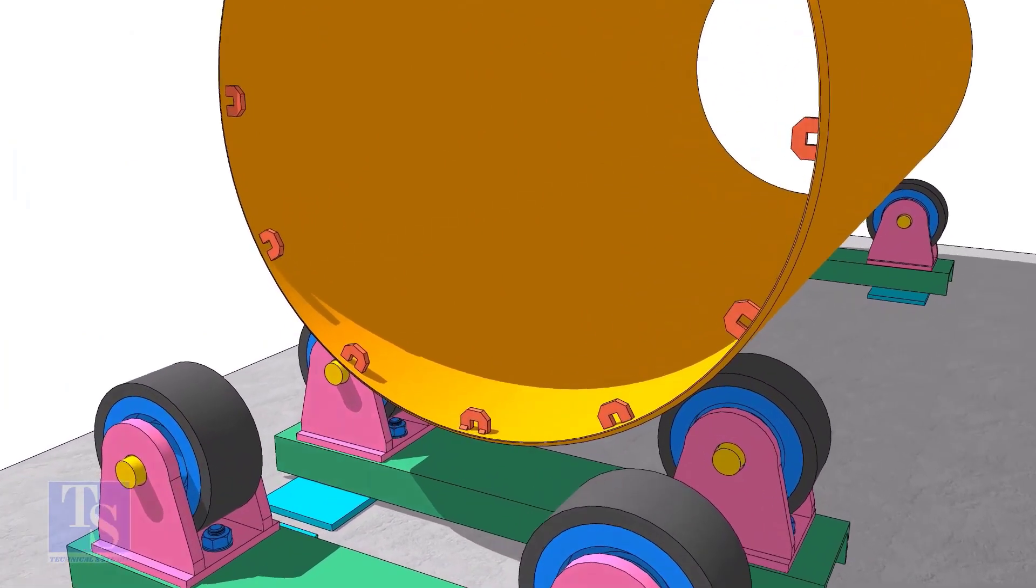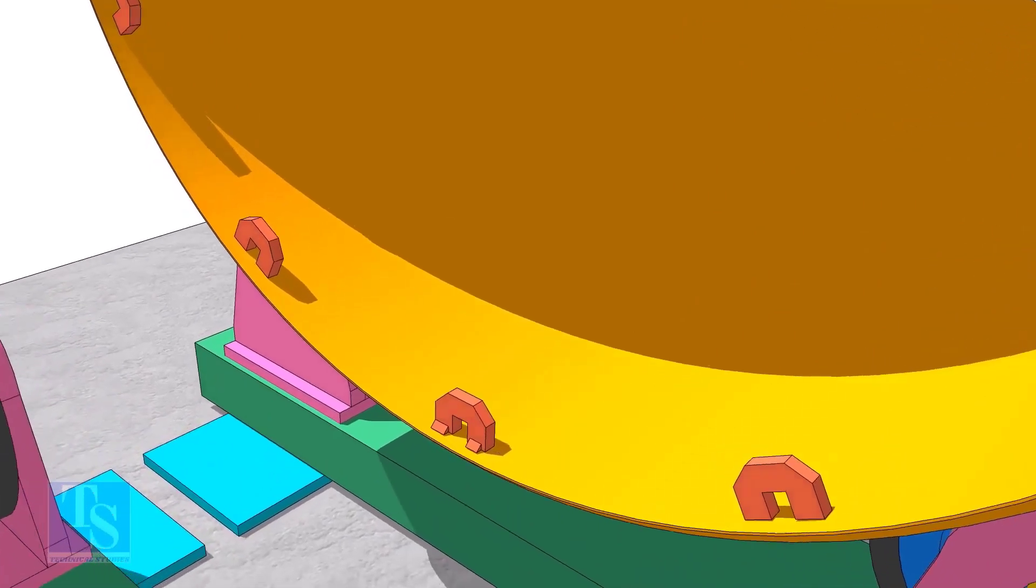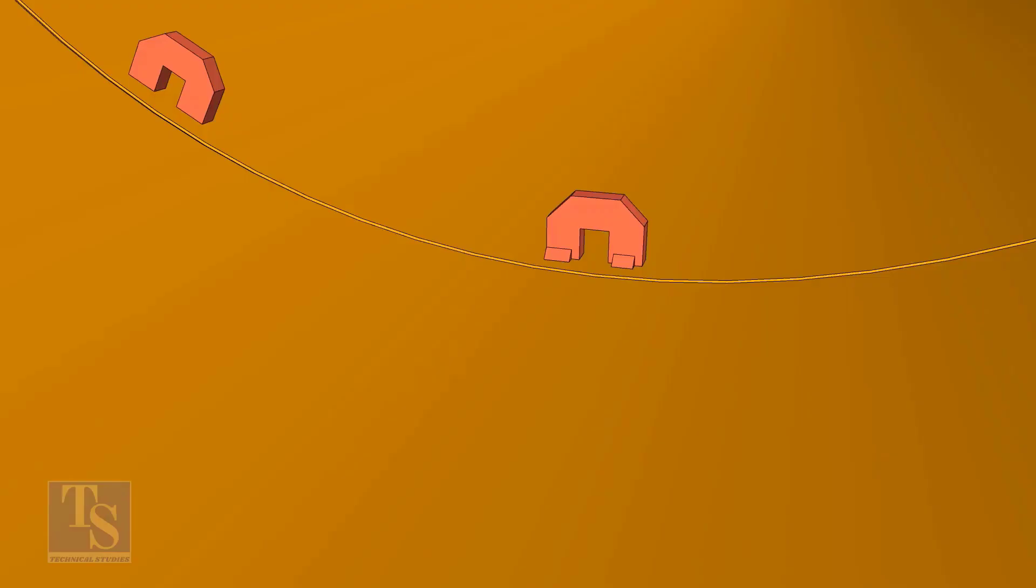TAC weld the seas on one shell near the end as shown. If the thickness of the pipe is less, you may need more seas. Don't weld too big tacks. Always TAC weld from the wedge side only.